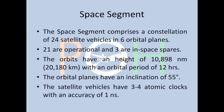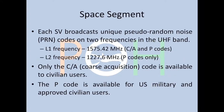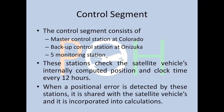Satellite vehicles have three to four atomic clocks with an accuracy of one nanosecond. Each satellite vehicle broadcasts a unique Pseudo Random Noise (PRN) code on two frequencies in the UHF band: L1 at 1575.42 MHz and L2 at 1227.6 MHz. Only the C/A (Coarse Acquisition) code on L1 is available to civilian users, while the P-code is available for US military and approved civilian users.